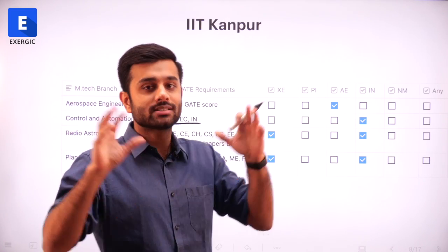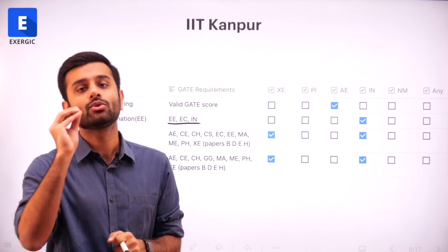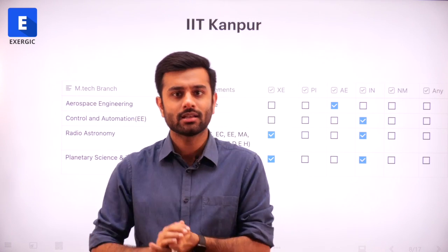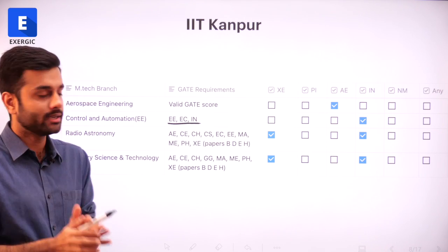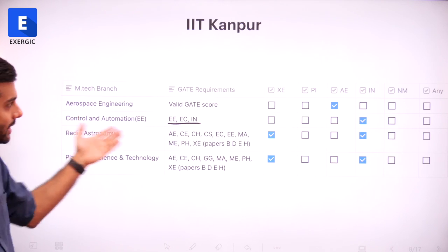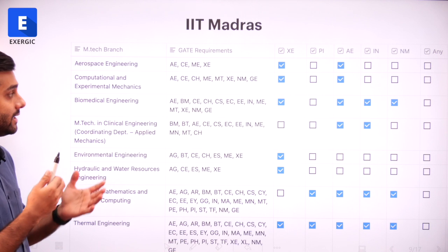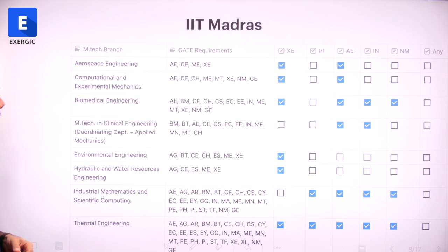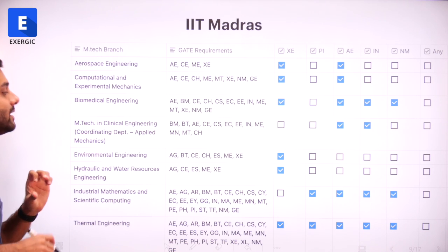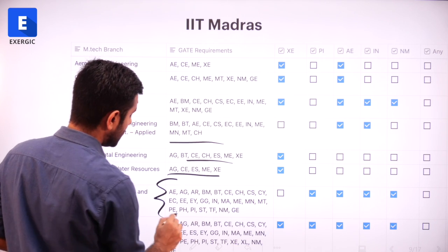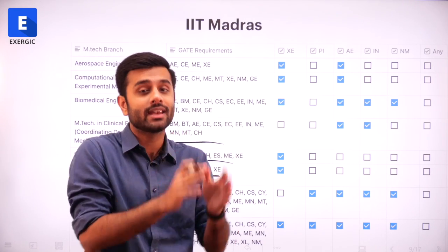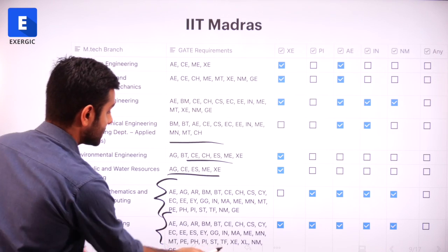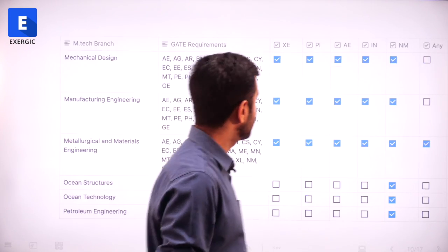Don't just think that the branch with the most number of options is best for you. If you are slightly inclined in a different direction and don't want to pursue your career only in mechanical, then such specializations can help you. IIT Kanpur also offers Radio Astronomy and Planetary Science and Technology. In IIT Madras, you can see all the branches — Aerospace, Biomedical Engineering, Environmental Engineering, Hydraulic and Water Resources Engineering — all such fields where many non-mechanical branches are also eligible, showing how diverse these fields are.